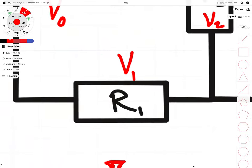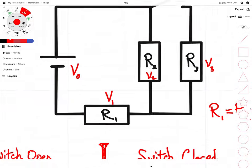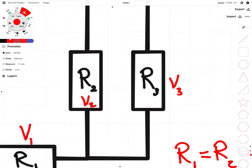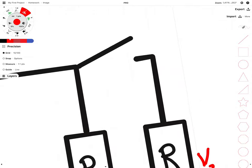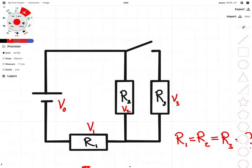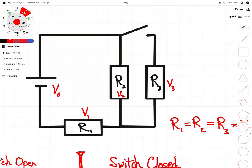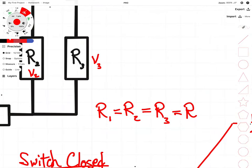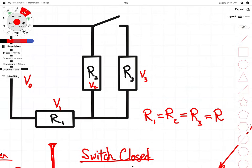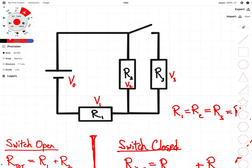We have R1 here, and this is obviously in series with the other two resistors. These two resistors, when the switch is closed, will be in parallel. First thing we need to do is set a condition, and that is that all these resistors are equal. So R1 is equal to R2 which is equal to R3, and for the sake of convenience those are all equal to R, and you'll see why that is useful later.